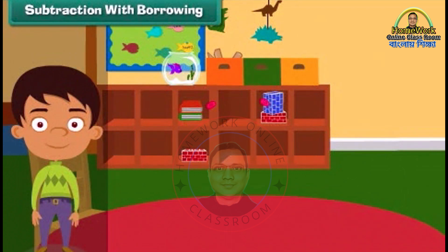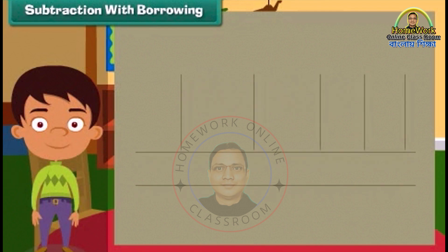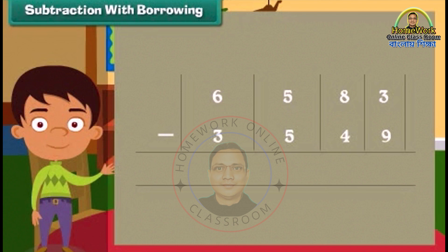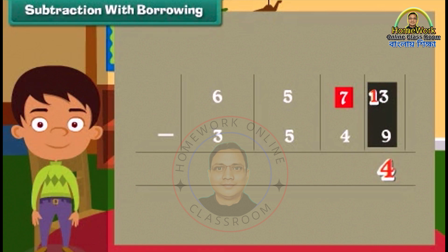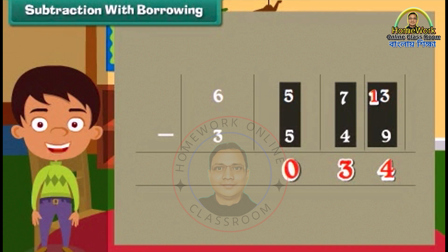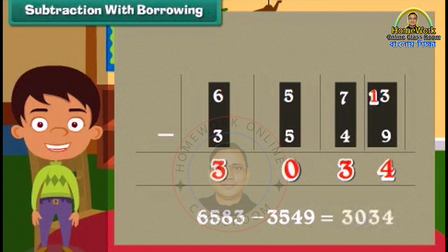Subtraction with borrowing. It's time to learn subtraction involving borrowing. Subtract 3549 from 6583. We again start from the ones column. Since 3 is smaller than 9, we will borrow 1 ten from 8. Therefore, 3 will become 13 and 8 will become 7. Subtract 9 from 13 — we get 4. Subtract tens: 7 minus 4 is 3. Similarly, subtract hundreds: 5 minus 5 is 0. Subtract thousands: 6 minus 3 is equal to 3. So 6583 minus 3549 is equal to 3034.